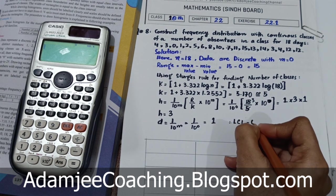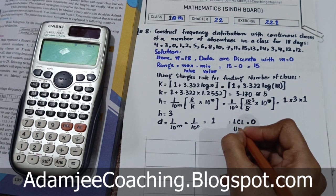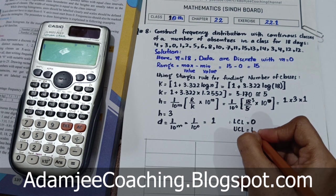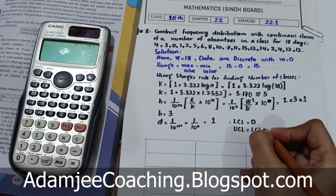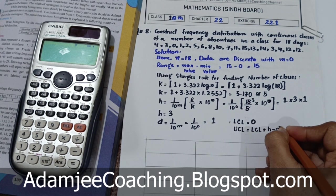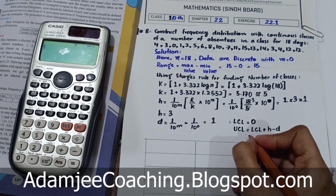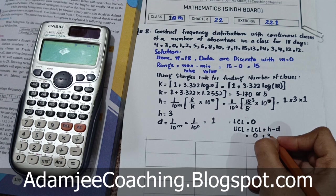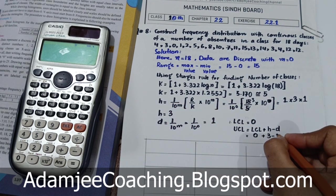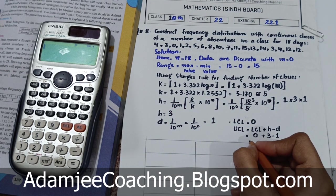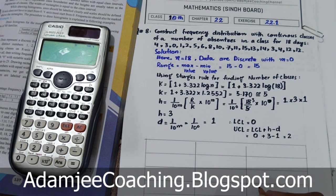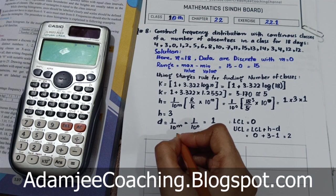LCL = 0 likh lete hain. UCL find out karne ke liye formula hai: LCL + h - d. LCL zero, h teen, d ek. Toh UCL = 0 + 3 - 1 = 2. Pehli class ka UCL aa gaya 2.